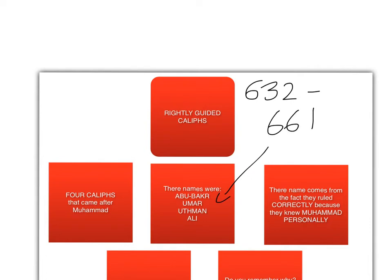The reason that they're called the Rightly Guided Caliphs is because they ruled correctly, as they knew Muhammad personally.